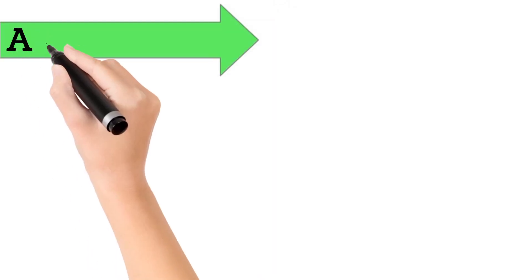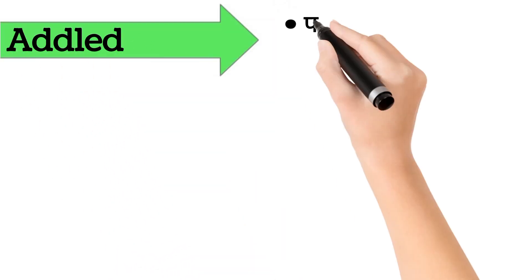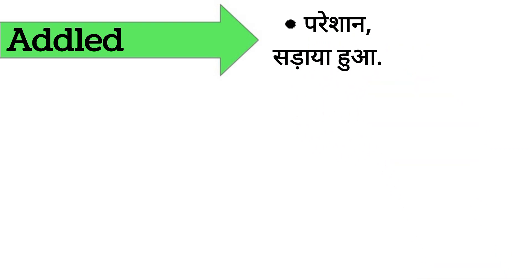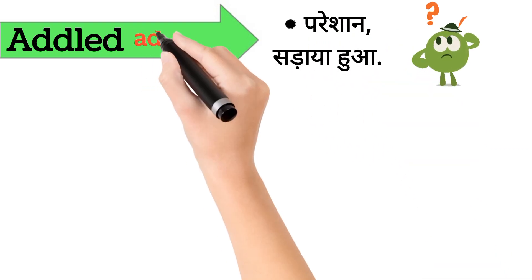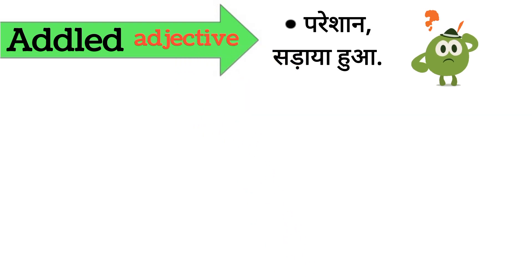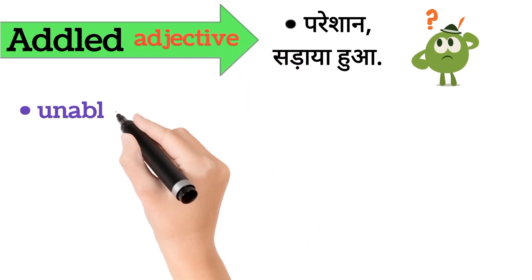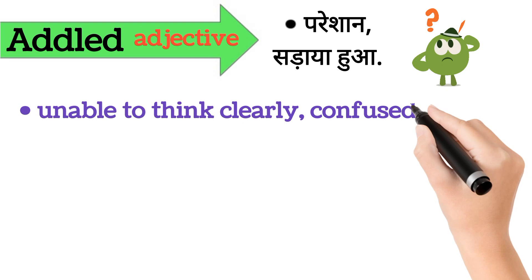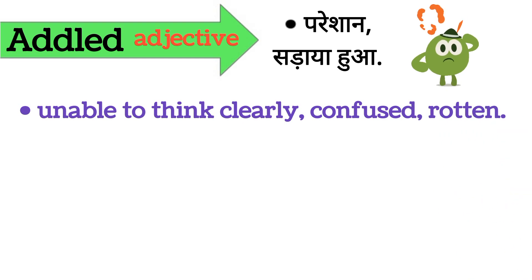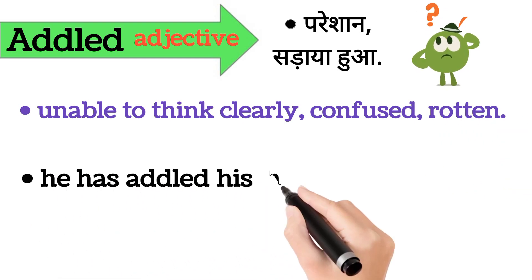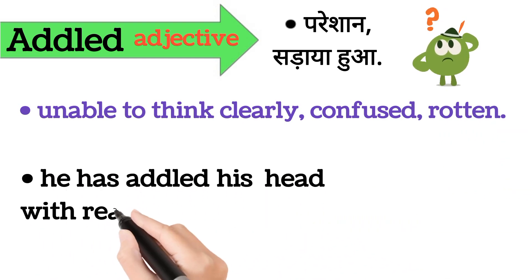Addled. Addled ka aarth hai paresaan, seraya hua. Addled word adjective form mein aata hai. It's also called unable to think clearly, confused, rotten. Iska example hai: this has addled his head with reading and writing all day long.